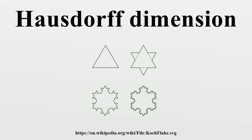The open set condition: To determine the dimension of the self-similar set A, we need a technical condition called the open set condition on the sequence of contractions ψ_i. There is a relatively compact open set V such that the images ψ_i(V) are pairwise disjoint subsets of V. The open set condition is a separation condition that ensures the images ψ_i do not overlap too much. Theorem: Suppose the open set condition holds and each ψ_i is a similitude — a composition of an isometry and a dilation around some point. Then the unique fixed point of ψ is a set whose Hausdorff dimension is S, where S is the unique solution of the equation involving the contraction coefficients.